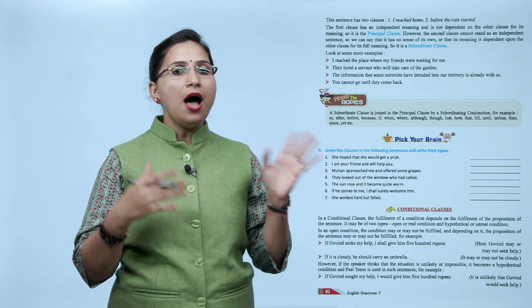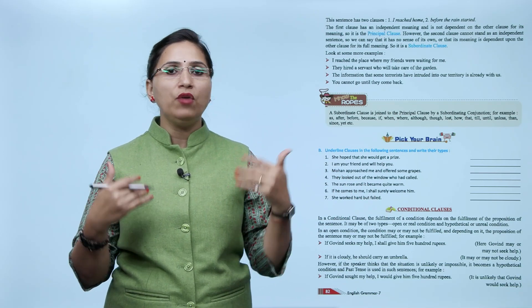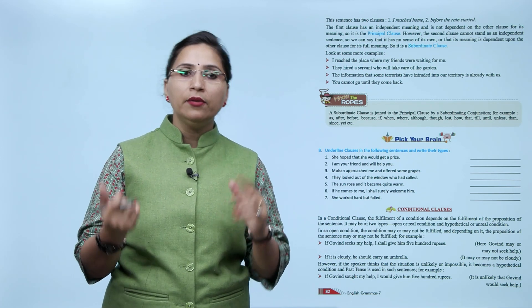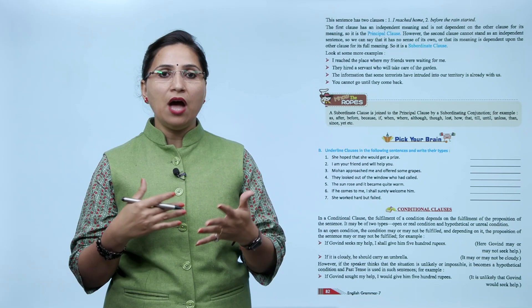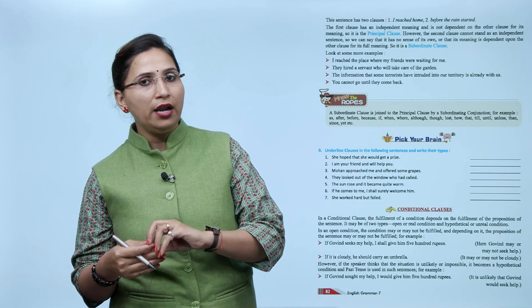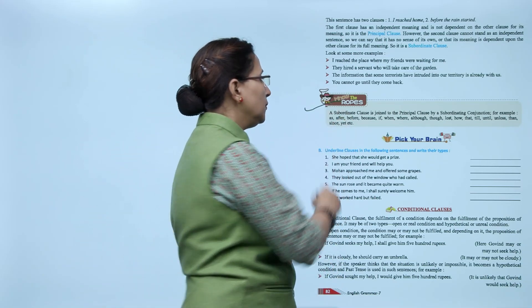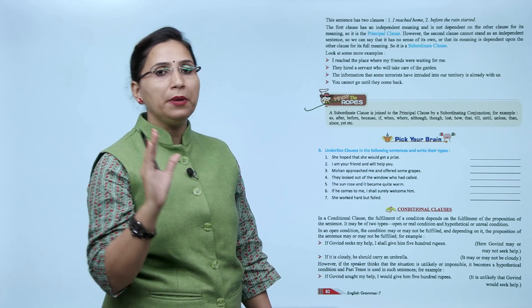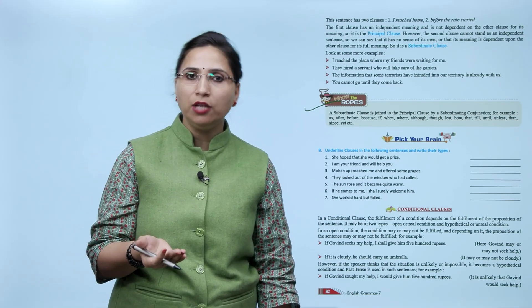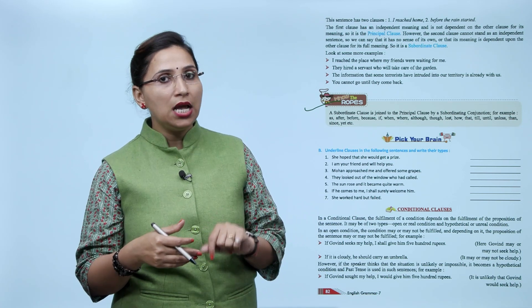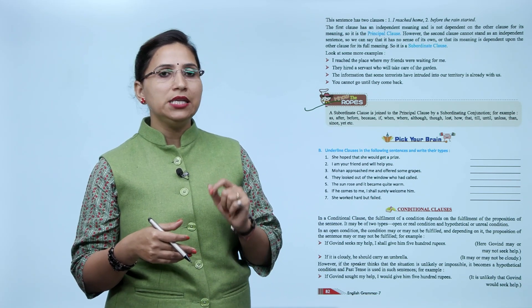Look at some more examples of subordinate clauses: 'I reached the place where my friends were waiting for me.' 'They hired a servant who will take care of the garden.' 'The information that some terrorists have infiltrated your city is already with us.' 'We cannot go until they come back.' Note: A subordinate clause is joined to the principal clause by subordinating conjunctions such as as, after, before, because, if, when, where, although, though, lest, how, that, till, until, unless, then, since, yet, etc.